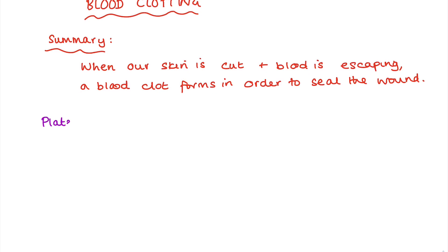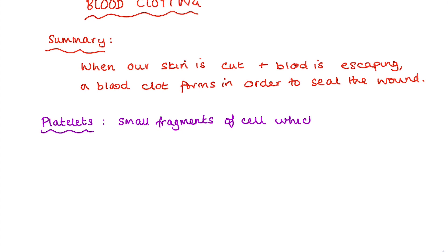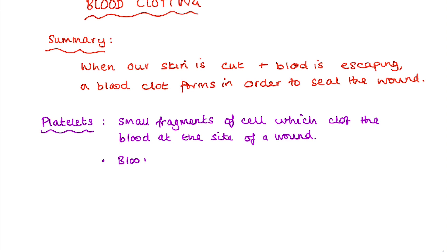You might remember from GCSE or IGCSE that platelets have a very important role. They are small fragments of cell which clot the blood at the site of a wound. We find them in blood plasma along with all the other types of cells, including white blood cells and red blood cells.